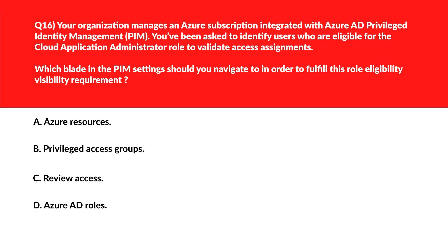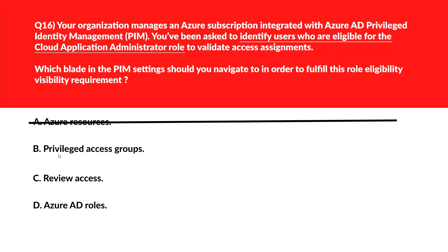This question tests your concepts on Azure AD Privileged Identity Management (PIM). Option A: Azure Resources blade manages role assignments for Azure resource scopes but not directory roles like Cloud Application Administrator. Option B: Privileged Access Groups manages group-based role assignments but doesn't show individual role eligibility for directory roles. Wrong choice.